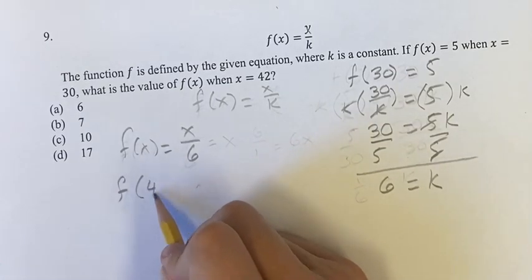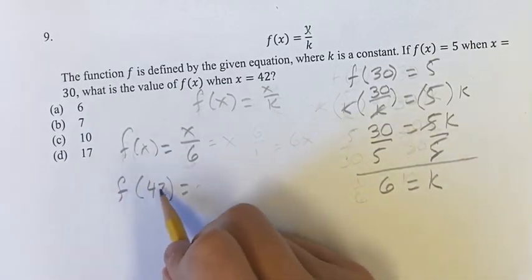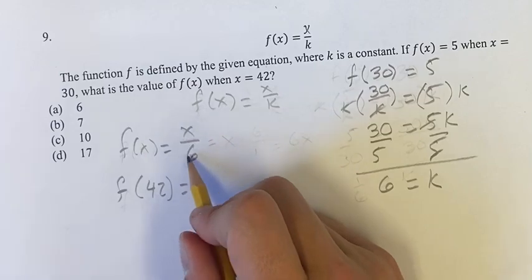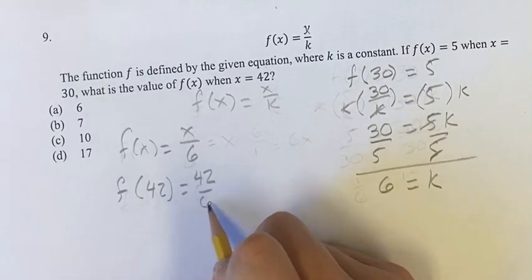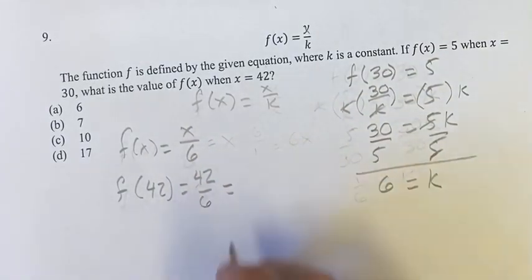All we have to do now is plug in 42 for x. So f(42) equals 42 over 6. We know that 42 divided by 6 is 7, and that is our answer.